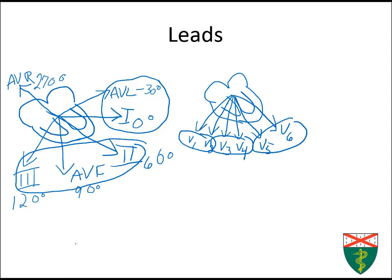Thinking about normal conduction, if you look at Lead 2 as a good example: conduction starts in the high right atrium and depolarizes the right atria, then the left atria. There's a slight pause in the AV node, then it moves downward and the summation of the vectors moves down Lead 2. Because the waveform is moving down the arrow, it produces a positive deflection — so we see predominantly an R wave. And for repolarization we see a positive T wave.